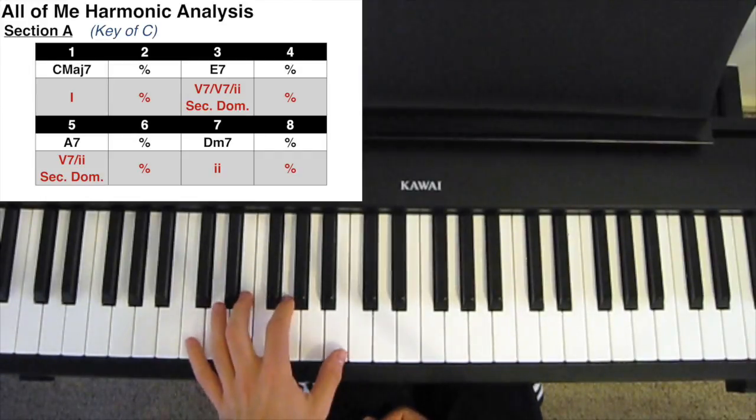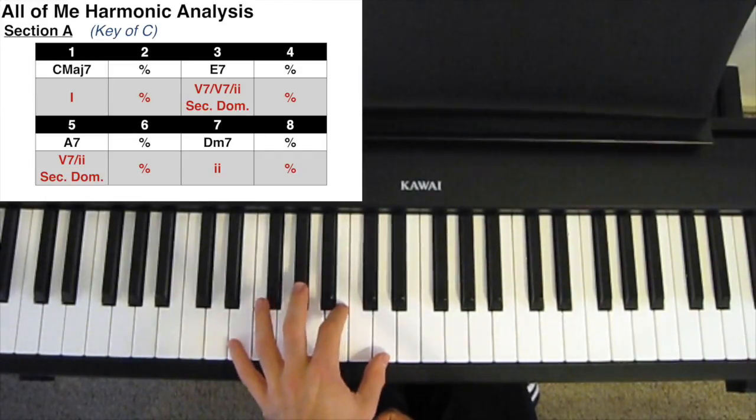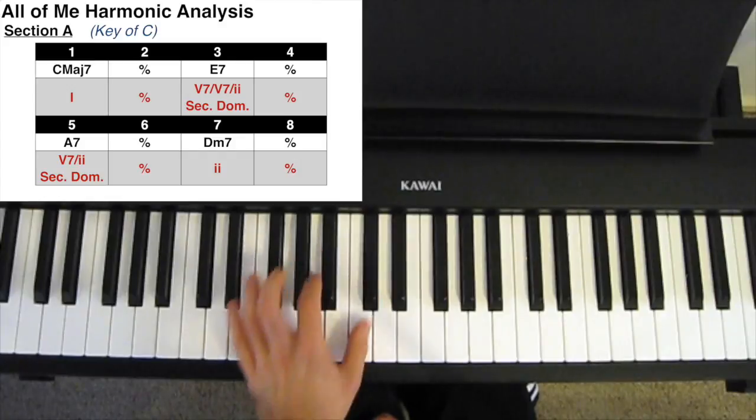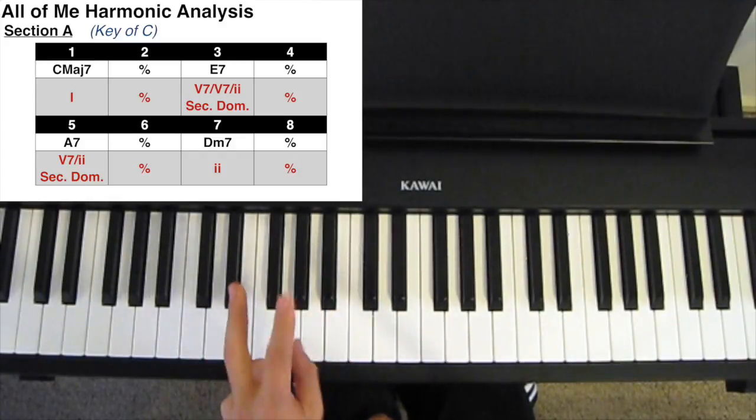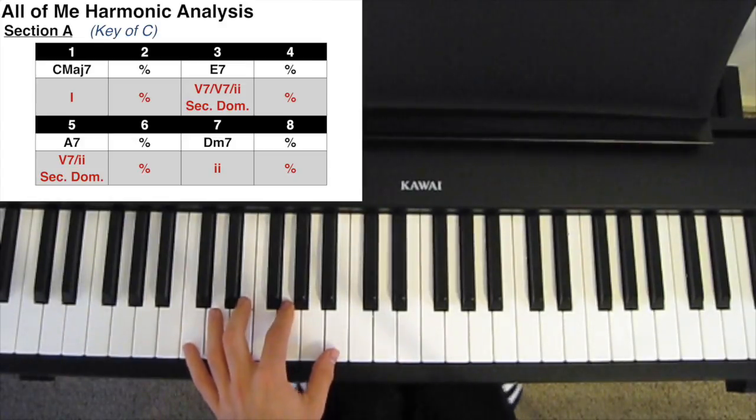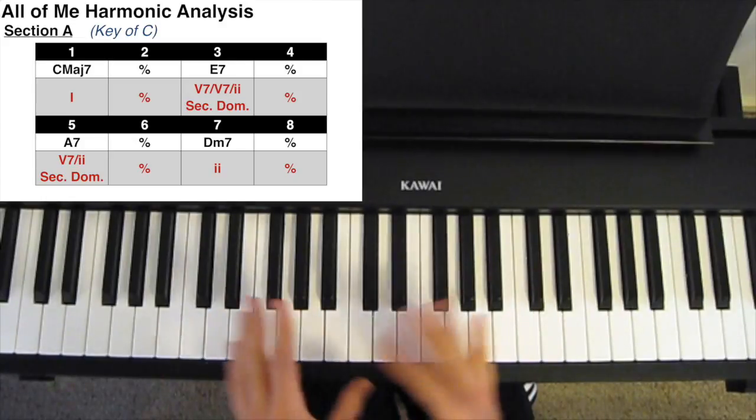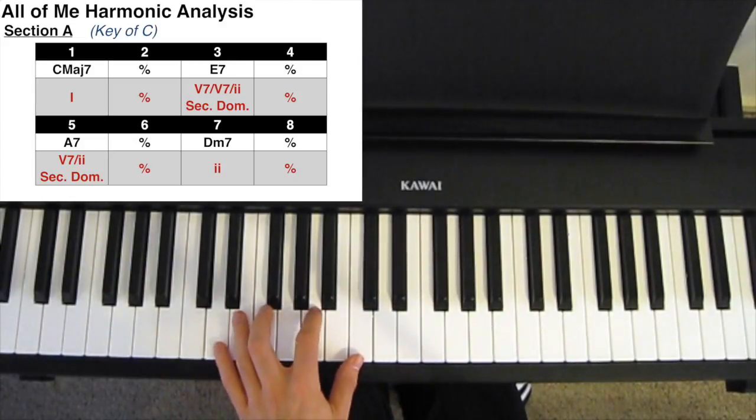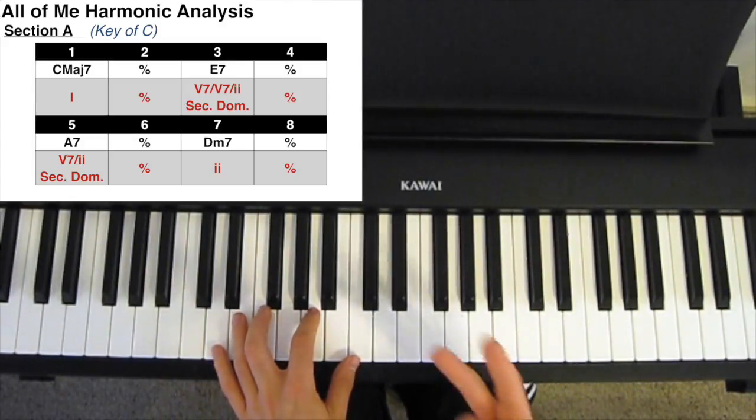Looking at section A, we have C going to E7, going to A7, going to D minor 7, with two bars for each chord. We start on the C, or the C major 7, which is our tonic chord, and we finish at the end of this section on the D minor 7, which is our 2 chord.